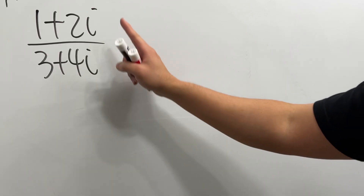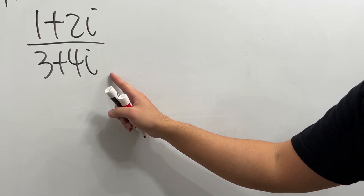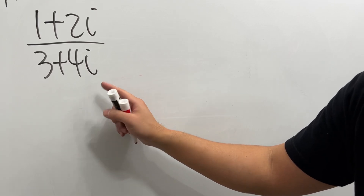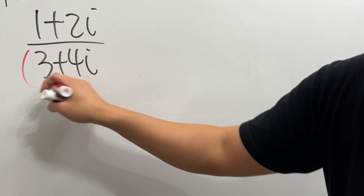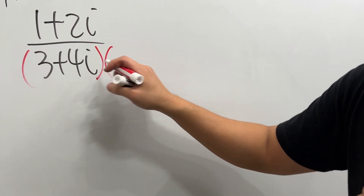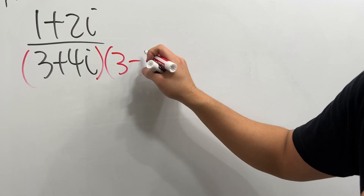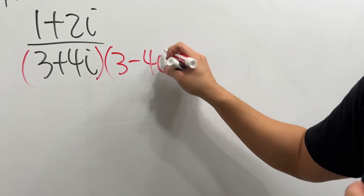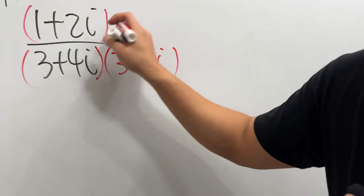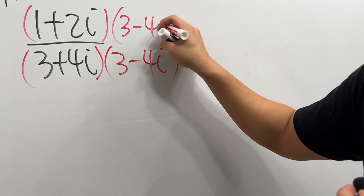How do we divide a complex number by another complex number? Pay attention to the denominator. We are going to multiply by its conjugate, which is 3 minus 4i. And of course, we do the same on the top — 3 minus 4i here.